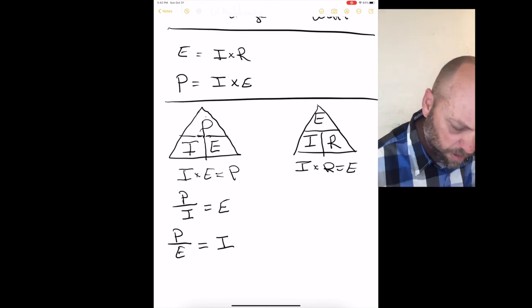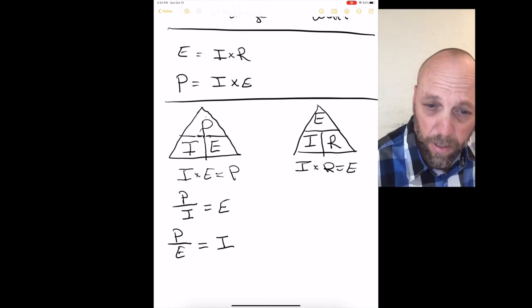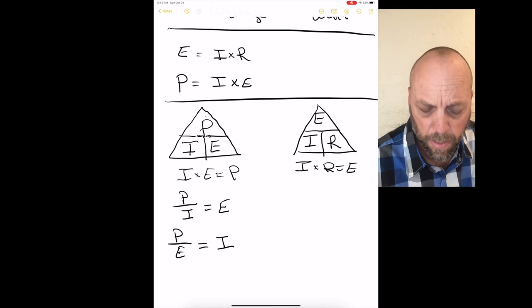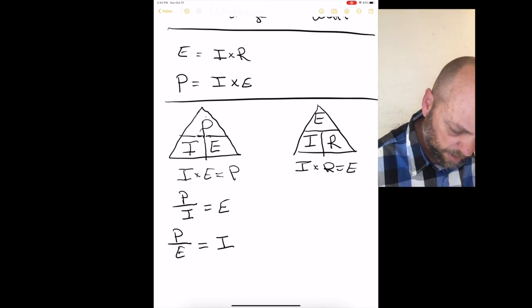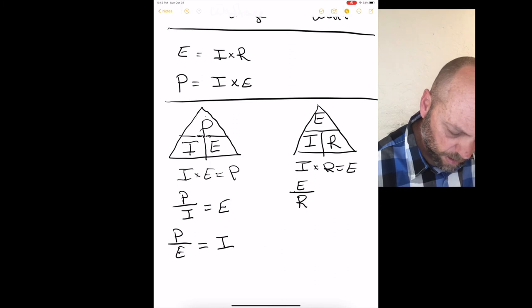If you're looking for current, go ahead and cover up the I on the triangle, and that would be E over R equals I.